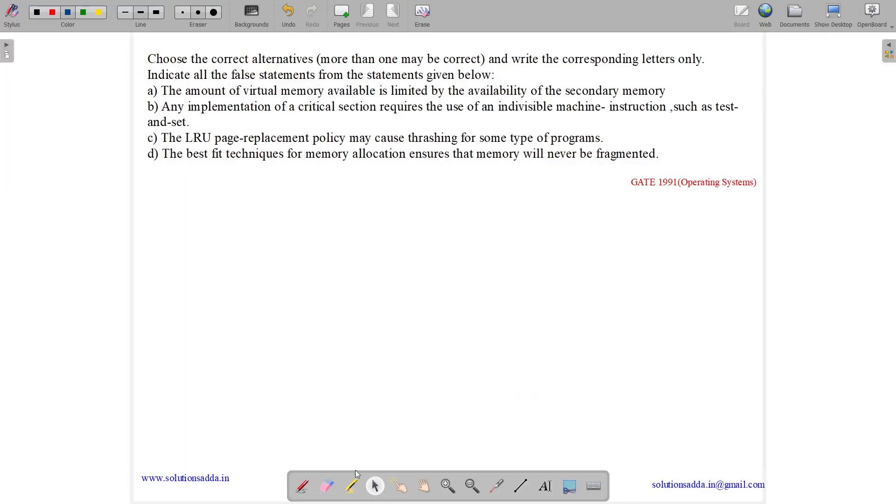This question belongs to operating system subject and was asked in CSE 1991. So the question states, choose the correct alternatives, more than one may be correct and write the corresponding letters only. Indicate all the false statements from the statements given below. We need to tell which all are false.